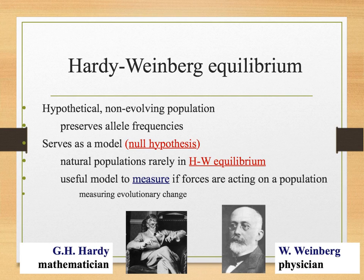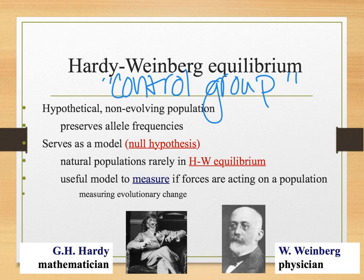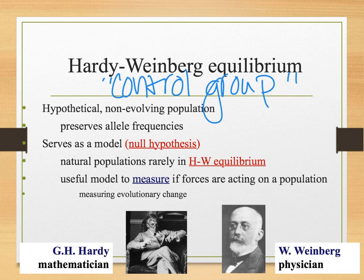Think of Hardy-Weinberg as our control group. If something is in equilibrium, it means it's stable — it is not evolving. That doesn't really happen in practice; there's almost always going to be some evolution. But Hardy-Weinberg is this idea of a non-evolving, non-moving population. We use it as a control group to compare. To quote Jeff Goldblum in the original Jurassic Park: life finds a way.